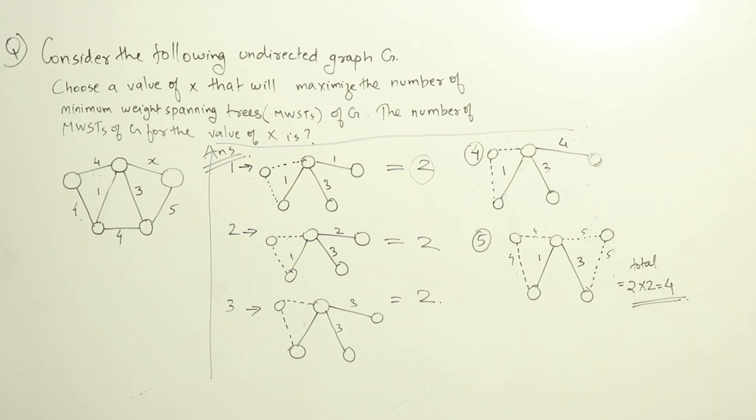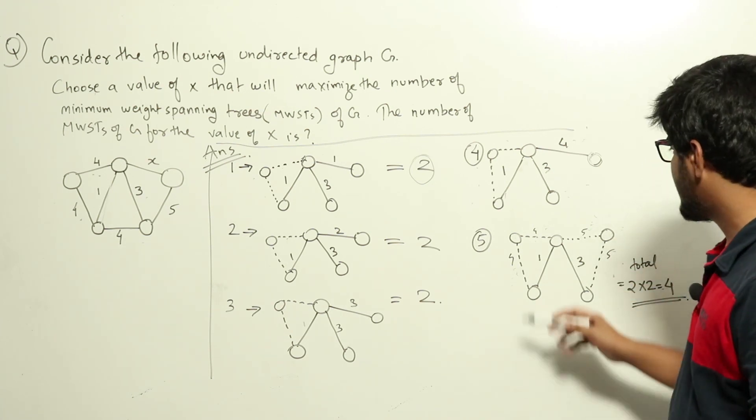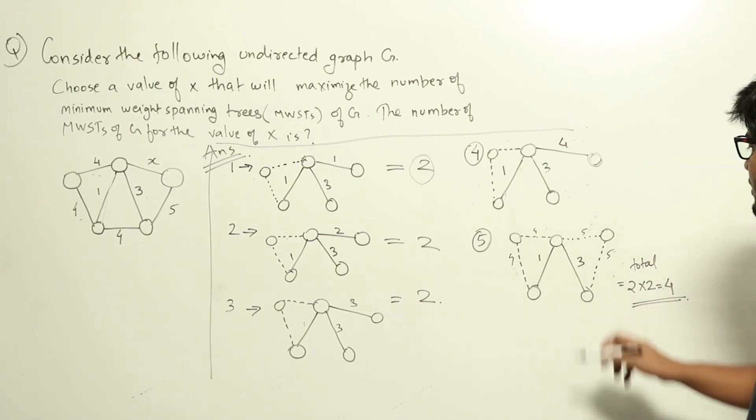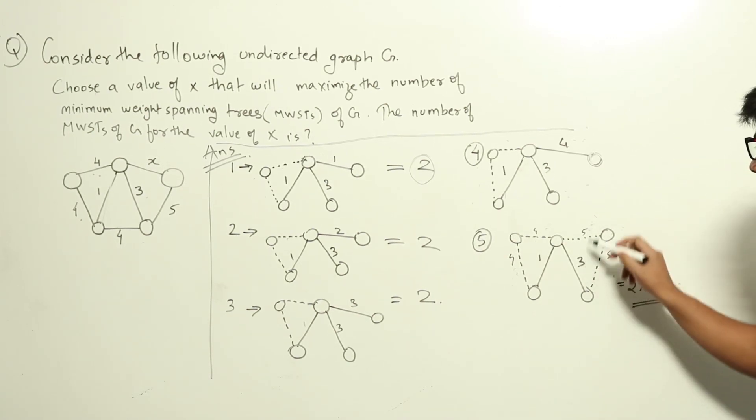Now if you try with X values greater than that, if I give 6 I will only be choosing the node with value 5 instead of 6. So increasing the value I won't be getting multiple spanning trees. So the answer is 4 when X is 5.